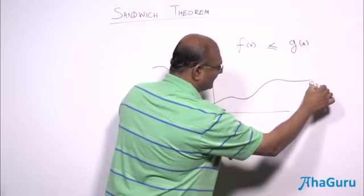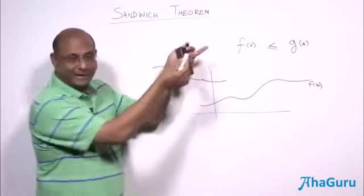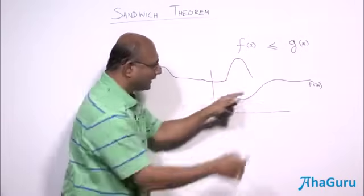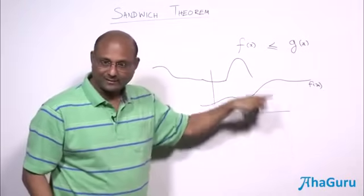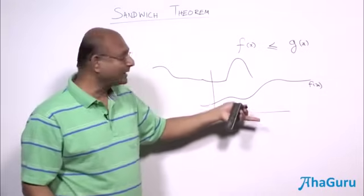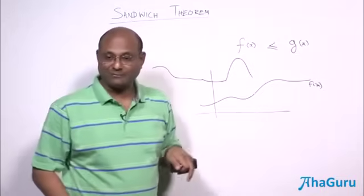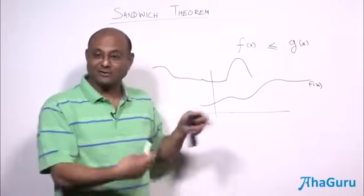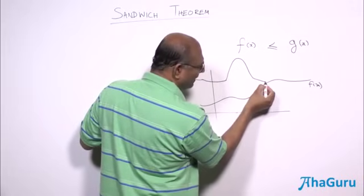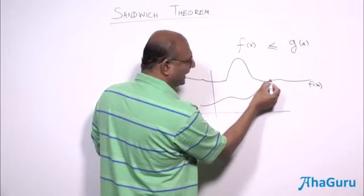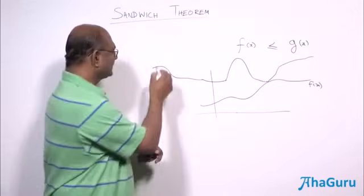If I call this f(x), then g(x) could behave quite differently — it could go up and come down — but can it cross f(x)? It can't, because if it crosses, then at that point g(x) is less than f(x), but we said f(x) is less than g(x) always. So g(x) can at most just touch f(x) and then go on, but it can never actually cross.